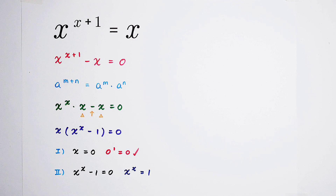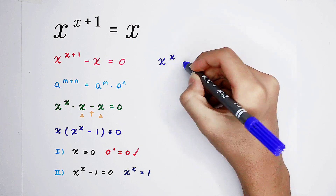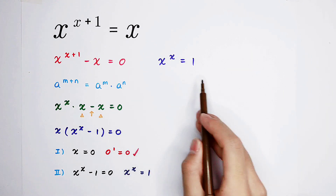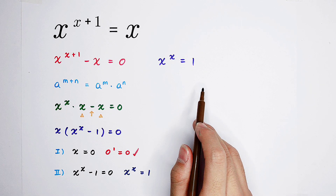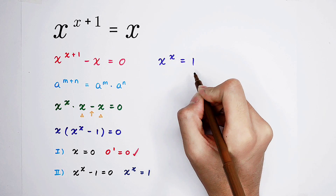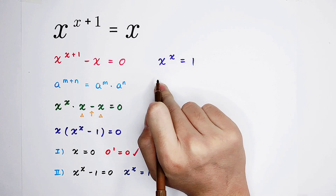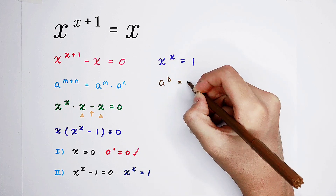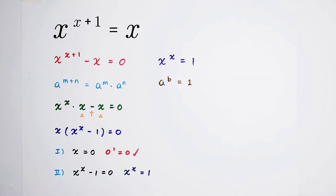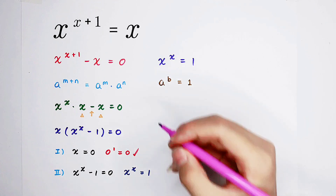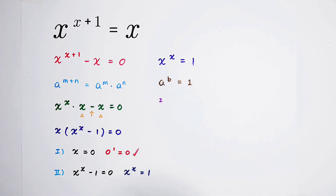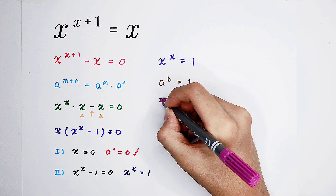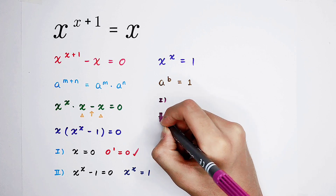Now we have to solve x to the power of x equals 1. This kind of equation is very typical. The right hand side is 1 and the left hand side is x to the power of x, which has the form a to the power of b. For an equation of the form a to the power of b equals 1, we have three cases: the first case, the second case, and the third case.